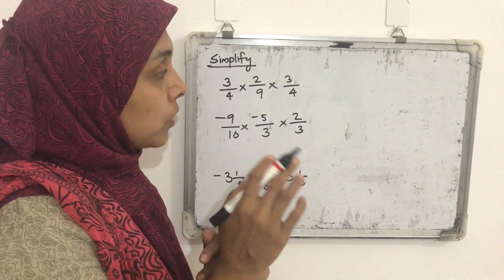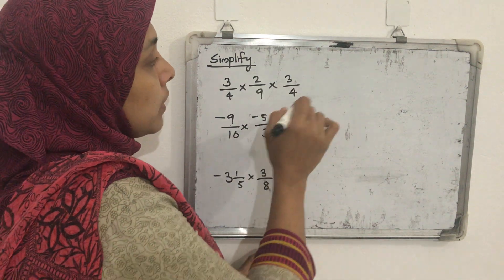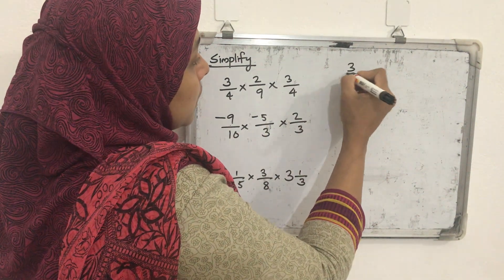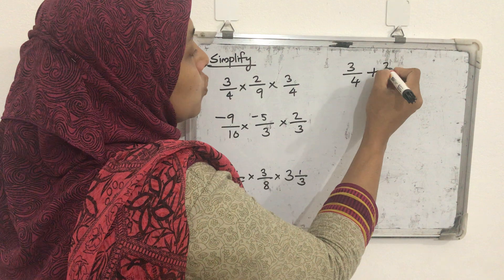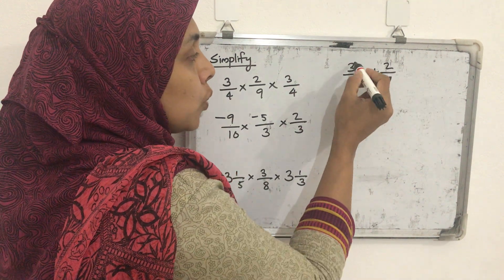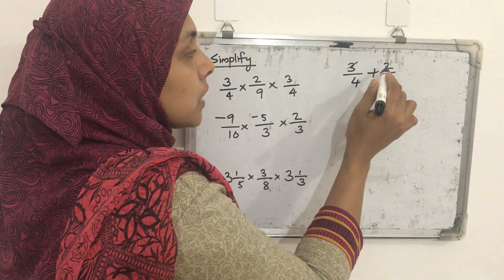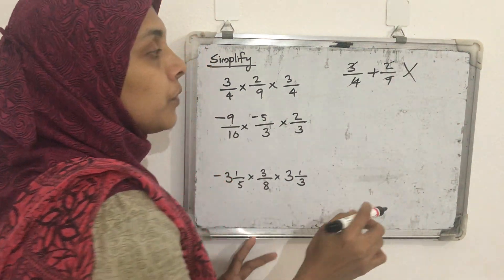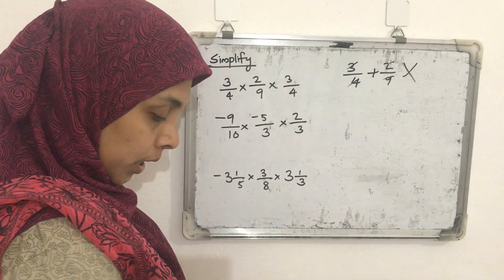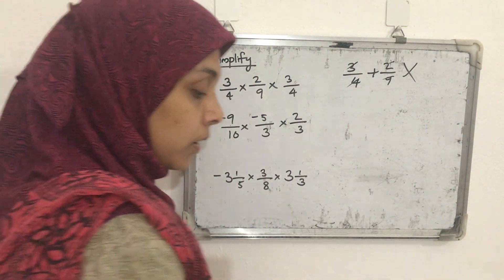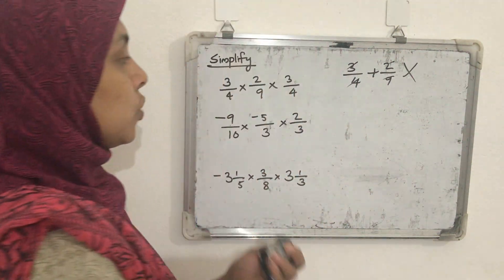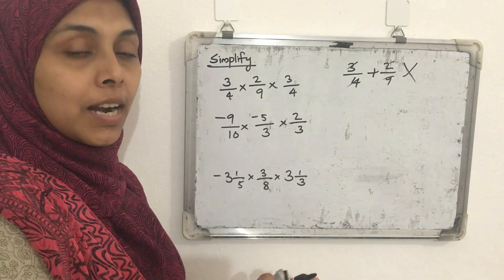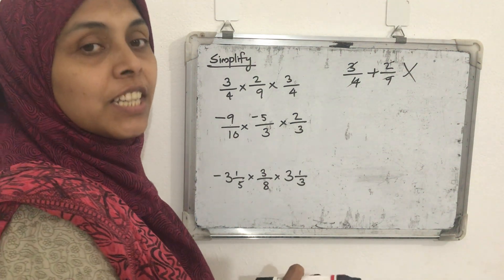One common mistake happens here. If you get a question like 3/4 plus 2/9, someone will try to cut 3 and 9, and cut 2 and 4. That is very wrong. We can do this cutting only in the case of multiplication. That is why multiplication is easy compared to addition and subtraction.